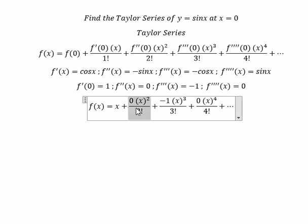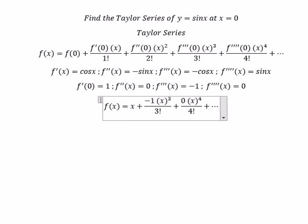This one you got 0, so we eliminate. This one you got 3 factorial, which is 6. And you got negative 1 over 6 x to the power of 3.